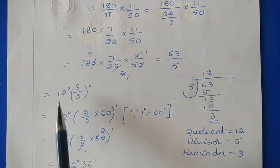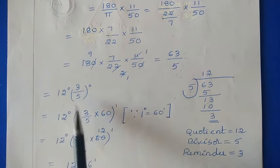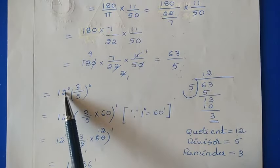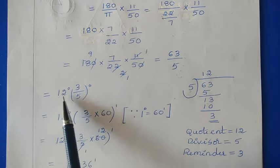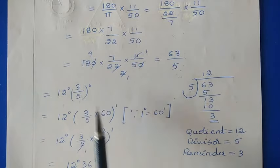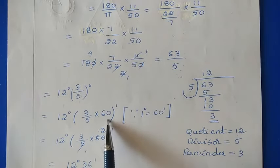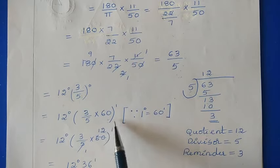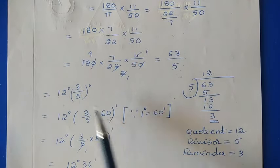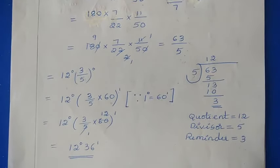QRD means: write the quotient first — that is 12 degrees. Then remainder over divisor: 3/5. This value is between 12 and 13 degrees, so we convert the fractional part to minutes. Since 1 degree = 60 minutes, multiply (3/5) × 60. After cancellation we get 36 minutes. So the final answer is 12 degrees 36 minutes.